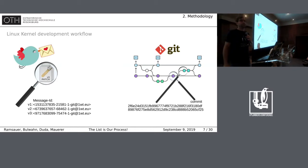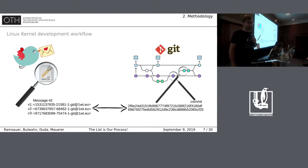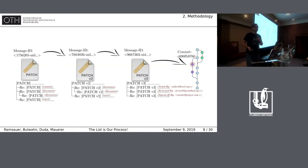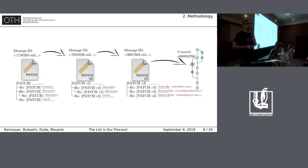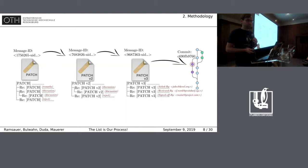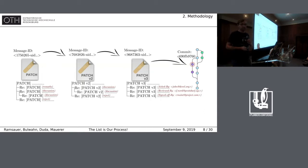The problem we face is that the connection between emails and the connection between the email and the commit hash is lost during the manual pickup process. In the repository, we only have the result of the development process that happened on the mailing list. Some maintainers may add link tags to their commits pointing to the last message in a series, but all the other steps are lost. For any analysis we'd like to do, we need to get this mapping of different mails to commit hashes — and we have a tool for that.